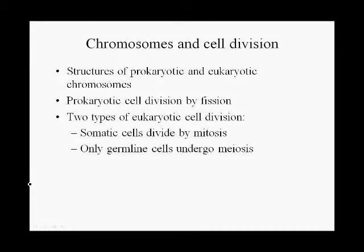In this video, we're going to talk about chromosomes and cell division. We'll start off by briefly touching on the structures of prokaryotic chromosomes and prokaryotic cell division. Then we'll go on to eukaryotes and their chromosome structure. We will primarily focus on eukaryotic cell division. There are two types: mitosis, which occurs in somatic cells, and meiosis, which occurs only in germline cells.